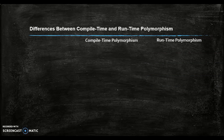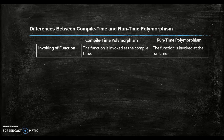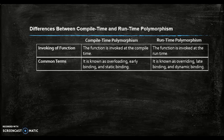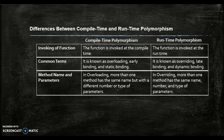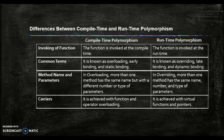What are the differences between compile time and runtime polymorphism? First, invoking of functions: the function in compile time polymorphism is invoked at compile time, while the function for runtime polymorphism is invoked at runtime. Compile time is known as overloading, early binding, and static binding; runtime is known as overriding, late binding, and dynamic binding. In overloading, methods have the same name but different number or type of parameters. In overriding, methods have the same name, number, and type of parameters. Compile time polymorphism is achieved with function and operator overloading; runtime polymorphism is achieved with virtual functions and pointers.